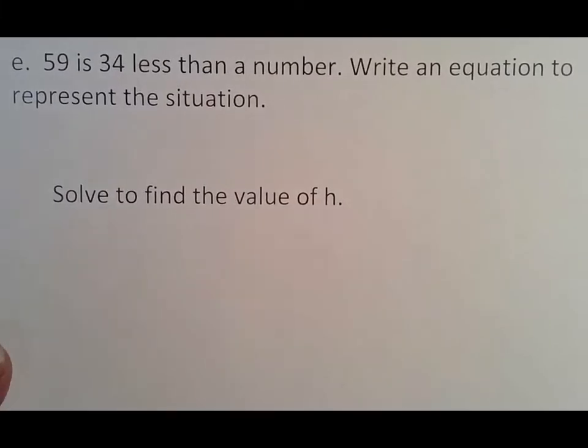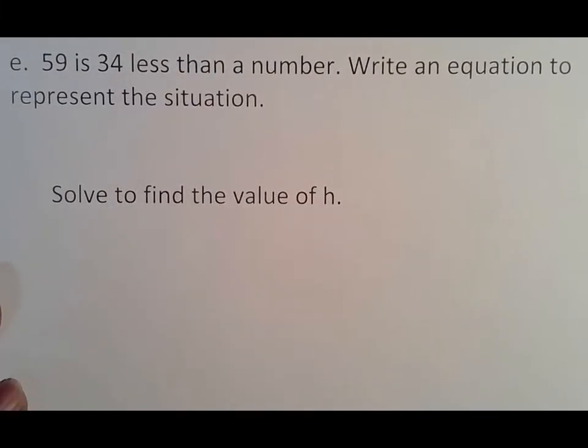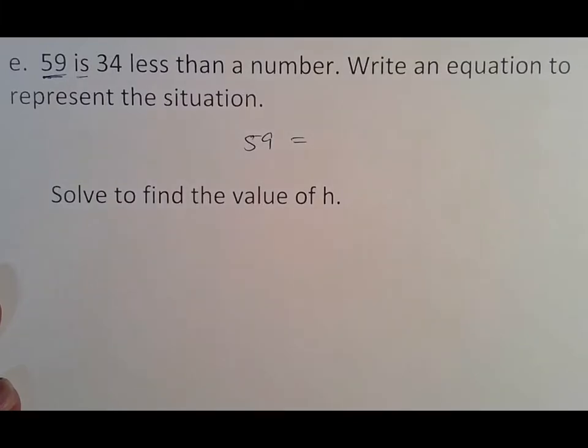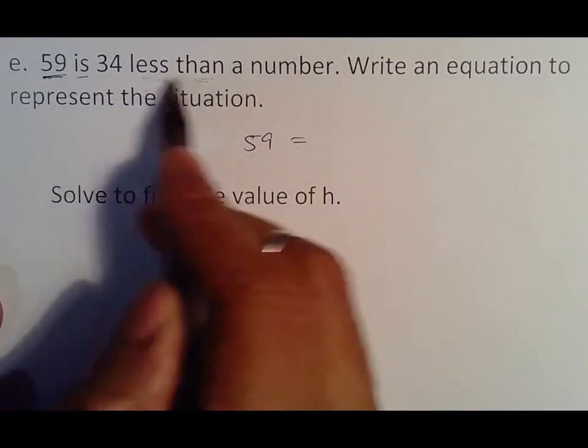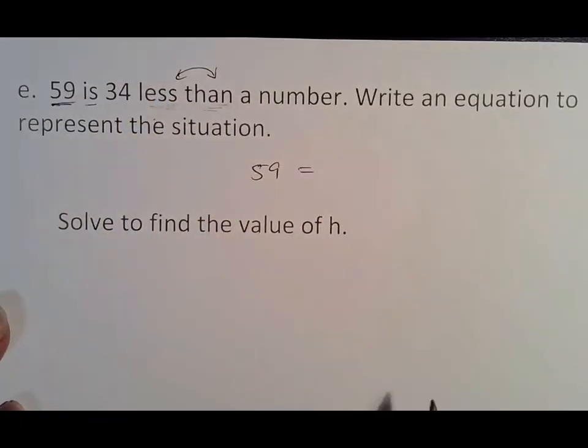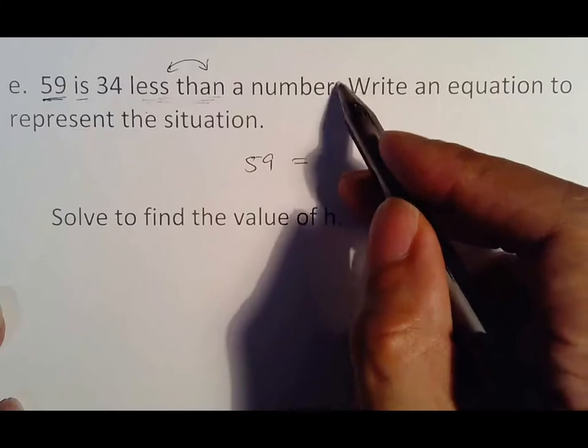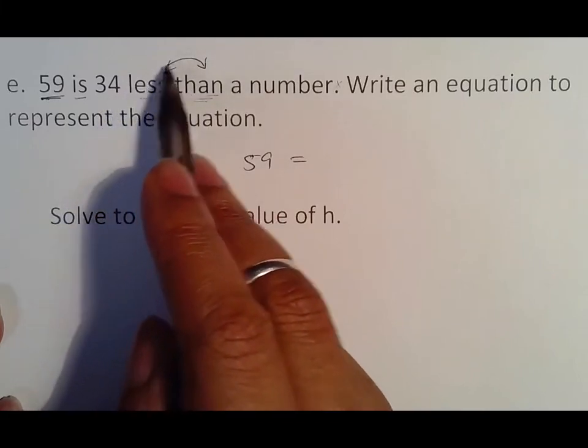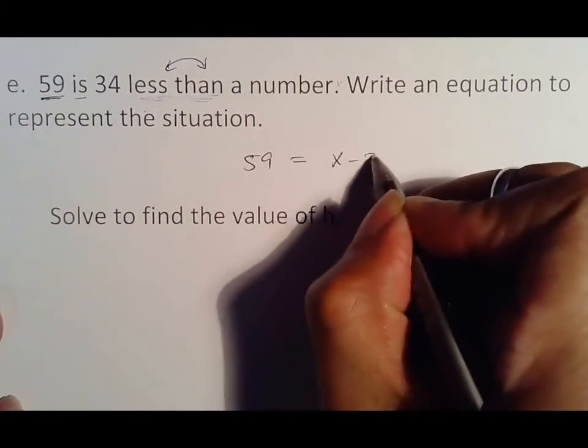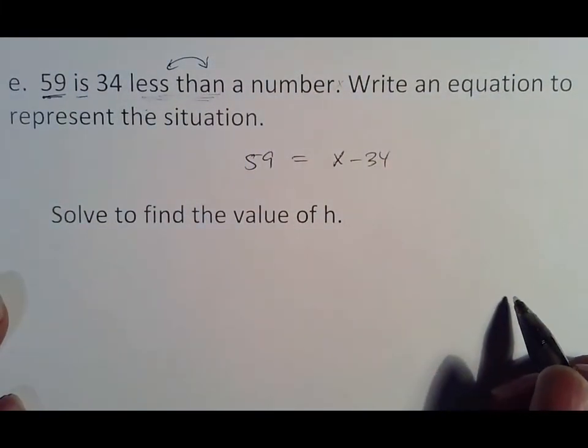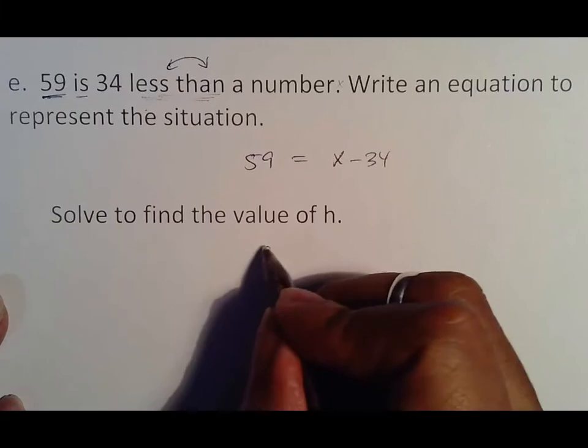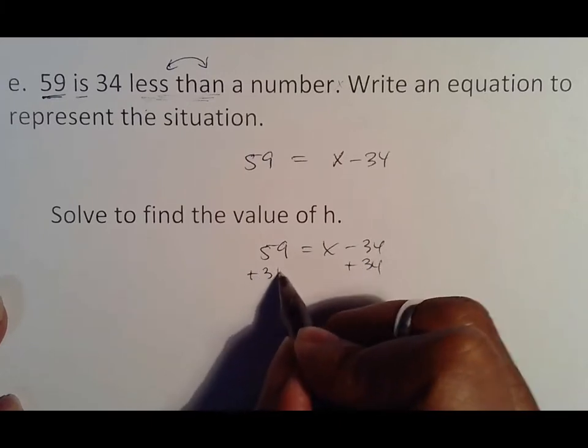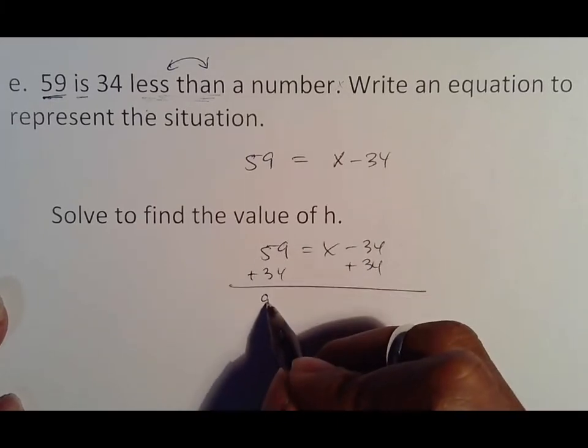59 is 34 less than a number. Write an equation. This one starts out differently because it says 59 is, and you want to keep that order. 59 is 34 less than, which means subtract. Less than is the one where I switch the order. Let's assume that's x. 34 less than number x means 34 doesn't go first because less than tells us to switch it, which means you'd actually do x minus 34. How do I move this 34? You add it to both sides. That makes 93 equals x, and that is our answer.